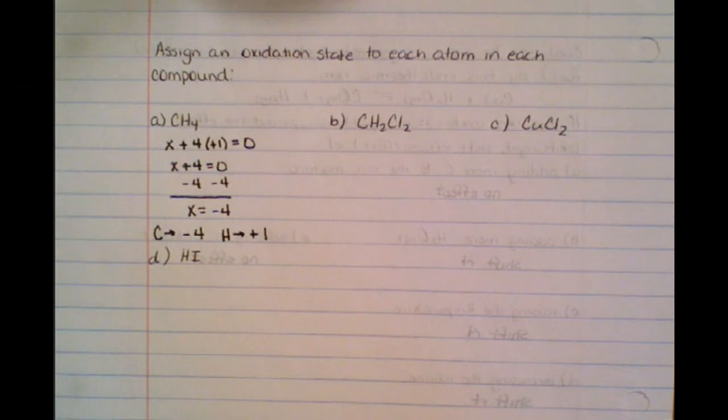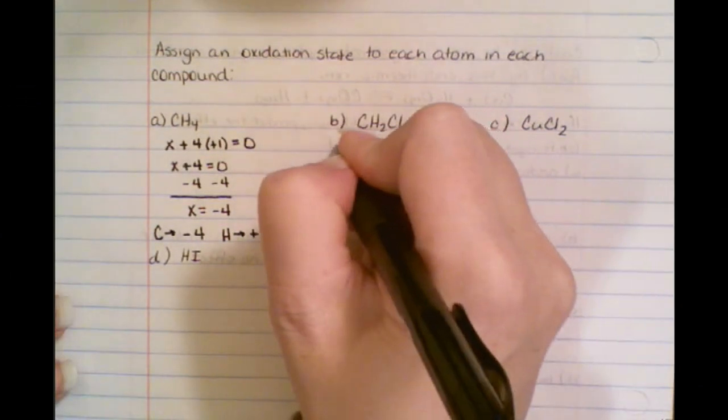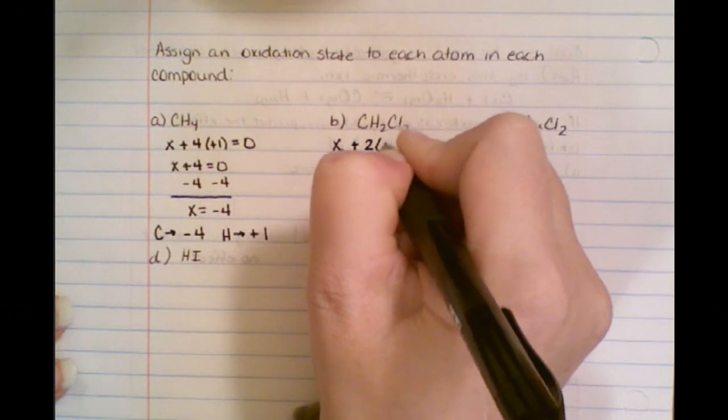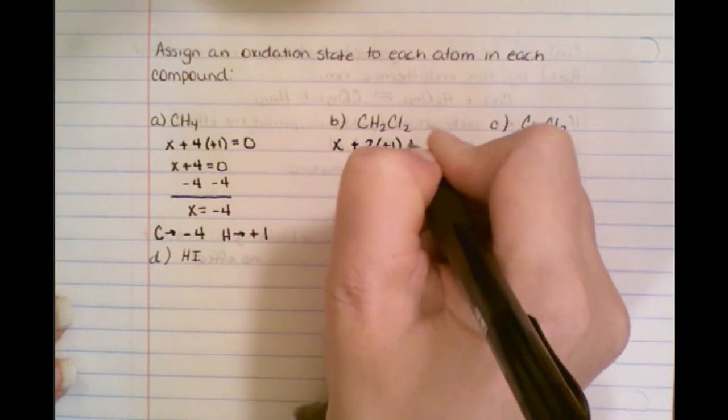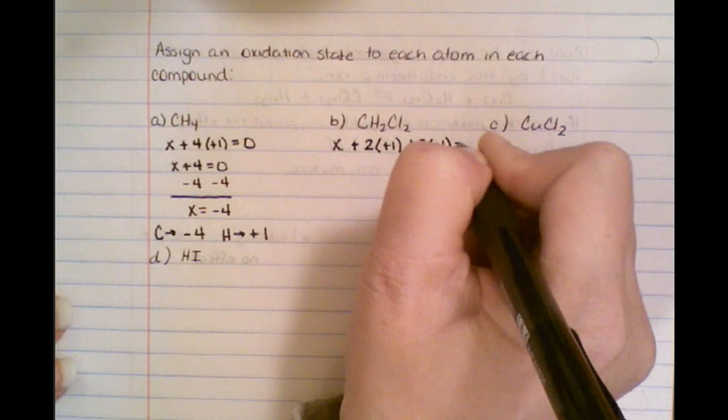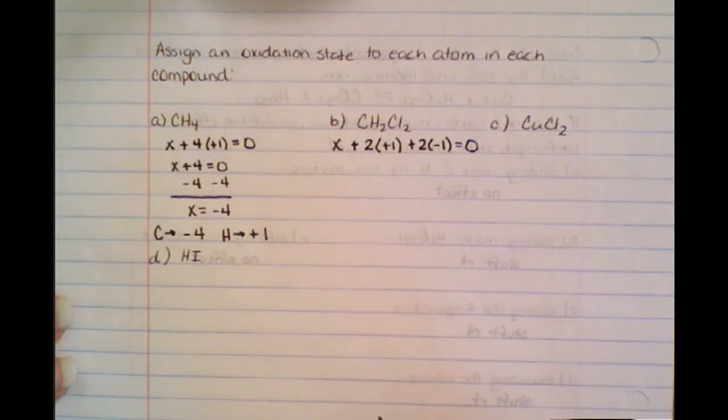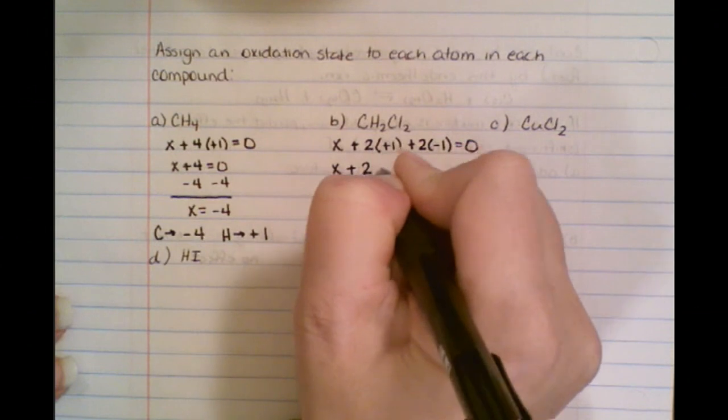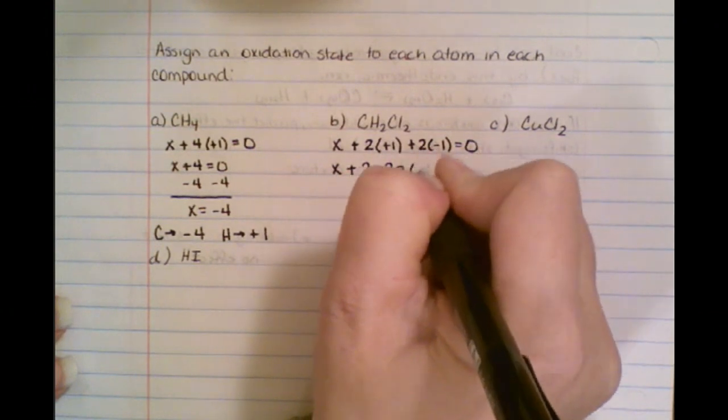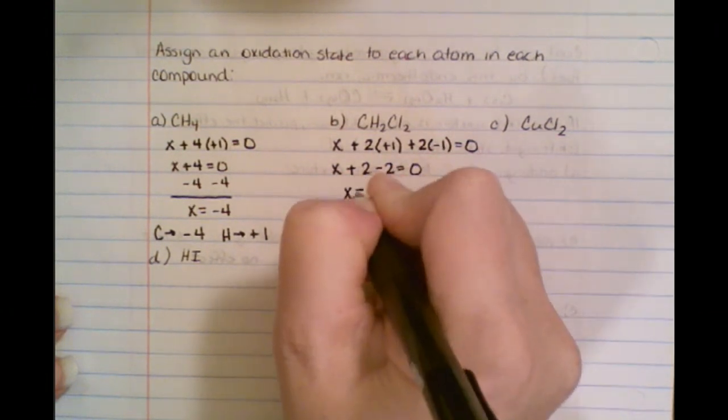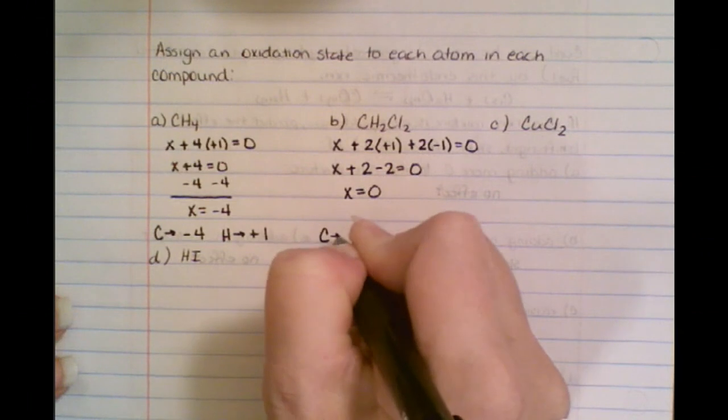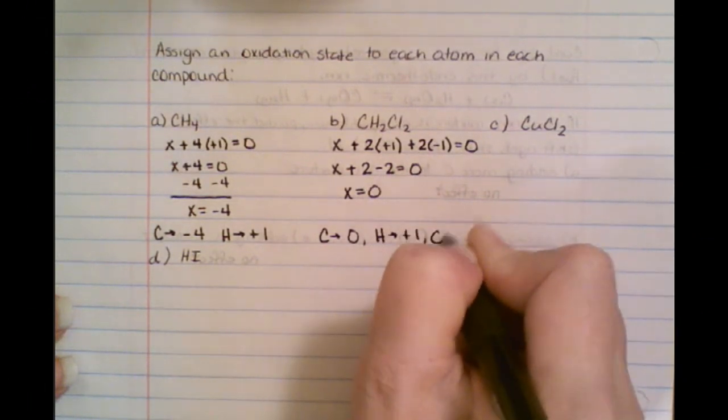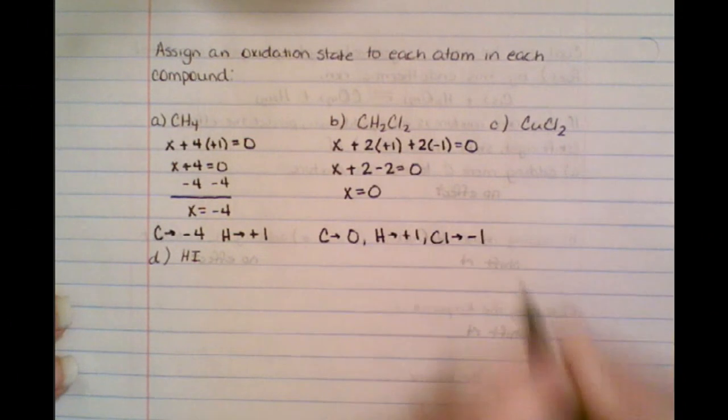So when we look at the next example, we are still looking for carbon because it's a variable. We have two hydrogens that are plus one each, and we have two chlorines that are minus one each. The overall charge is zero because there's nothing written as a superscript. So this simplifies to x plus two minus two, and then we get x equals zero. So that means that our carbon is zero, our hydrogen is plus one, and our chlorine is minus one.